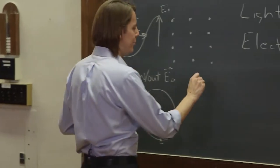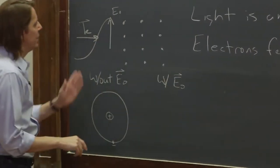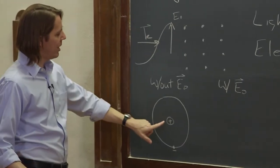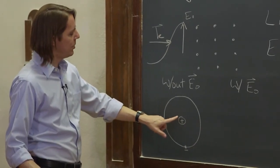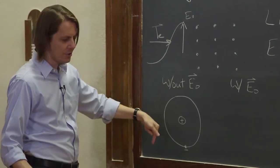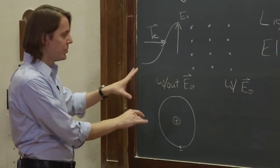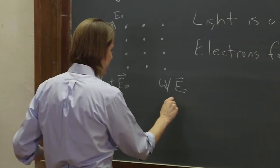But if we apply this field with E naught, and I've drawn it up this way, what would happen? The positive charge would feel a force up, and the negative charge would feel a force down. So the atomic little system would be perturbed, and I'll draw it highly exaggerated.